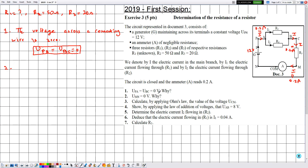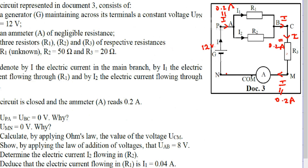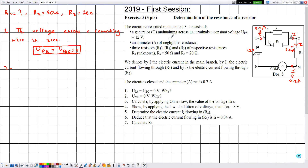In number 2, UMN is equal to 0. Why? Across M and N we have an ammeter, and in the given, they told us that the ammeter A is of negligible resistance, so the voltage across the ammeter is 0.